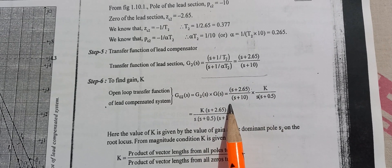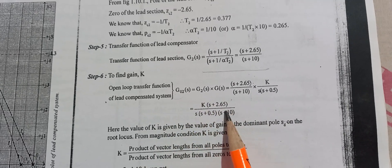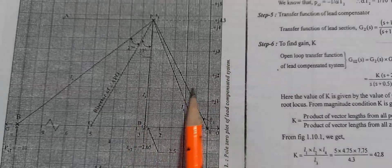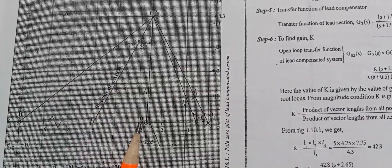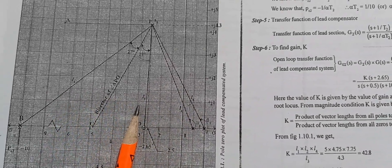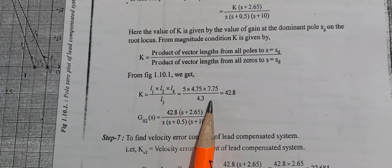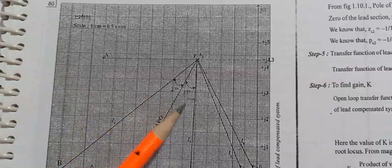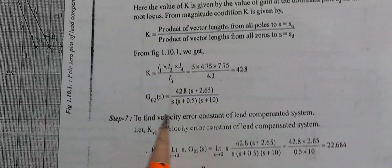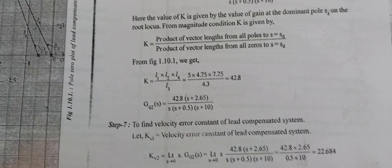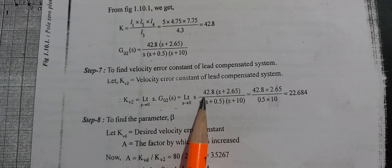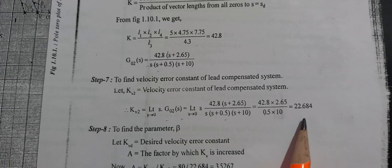We now determine the lead compensator and the K value. Measuring the lengths L1, L2, L3, and L4 from the diagram, with 1 cm equal to 0.5 units, we calculate the product of the lengths to find the K value.